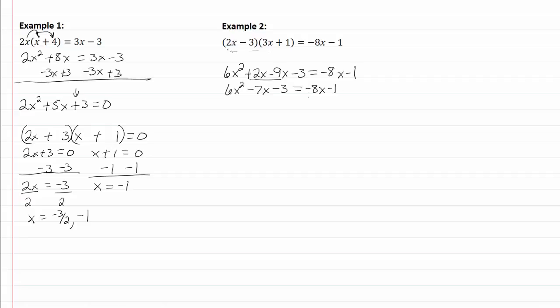I now need to get everything on one side, so I'm going to add 8x and a positive 1. So I now have 6x squared plus x minus 2 equal to zero.